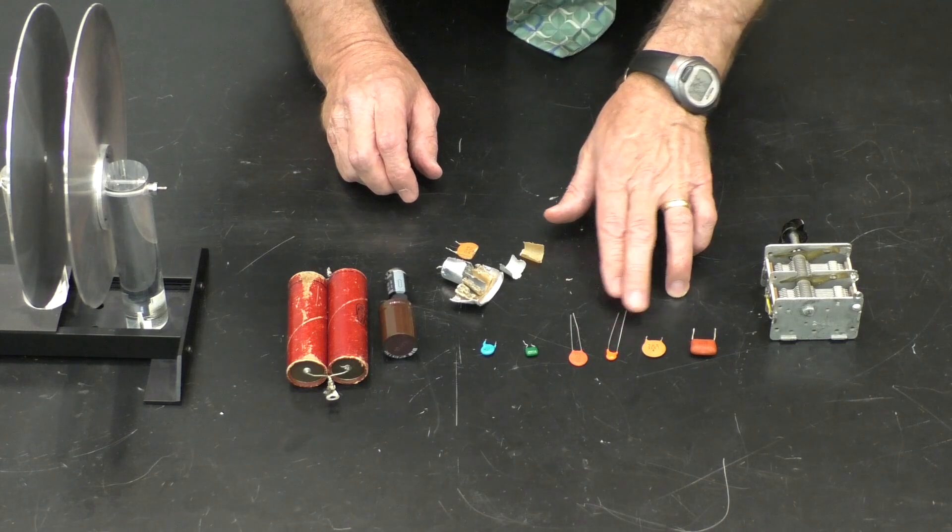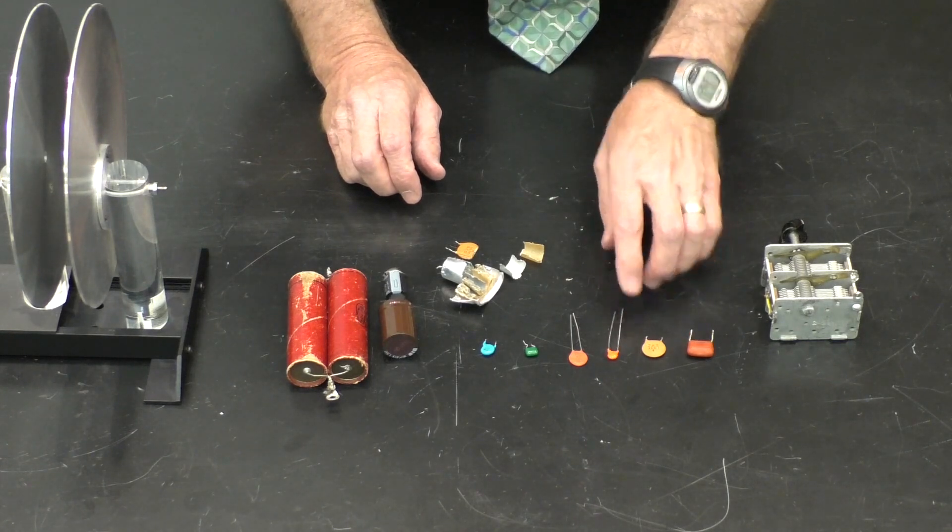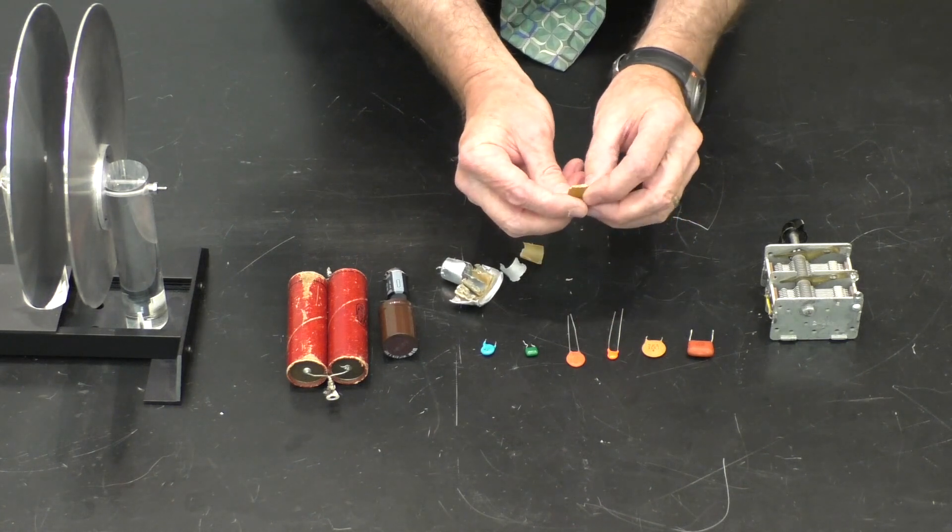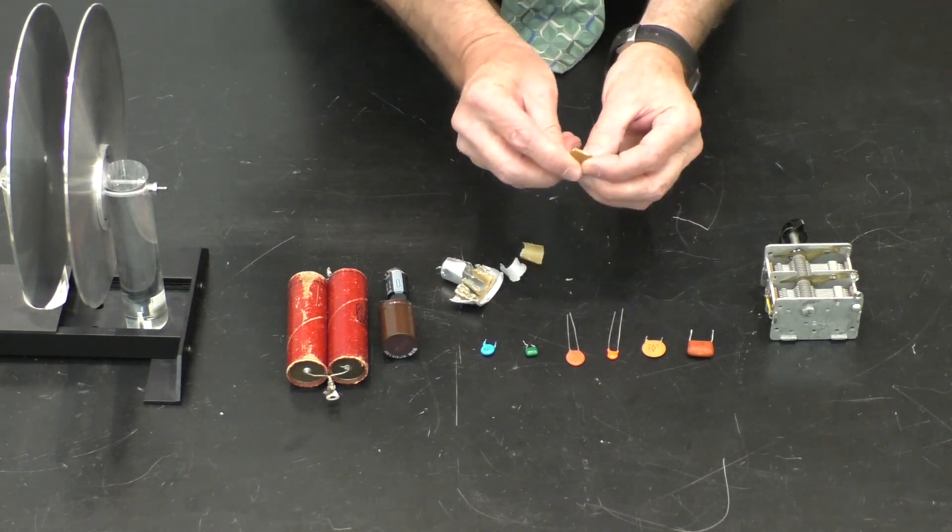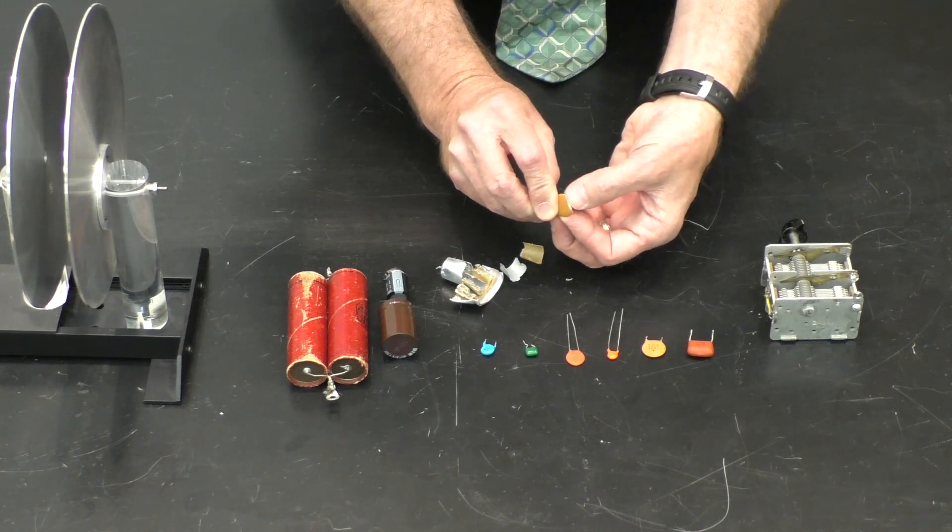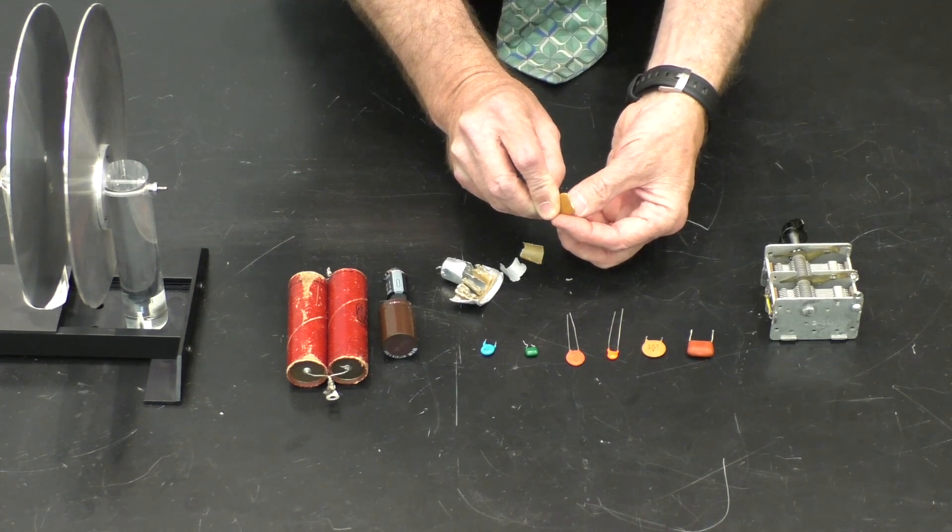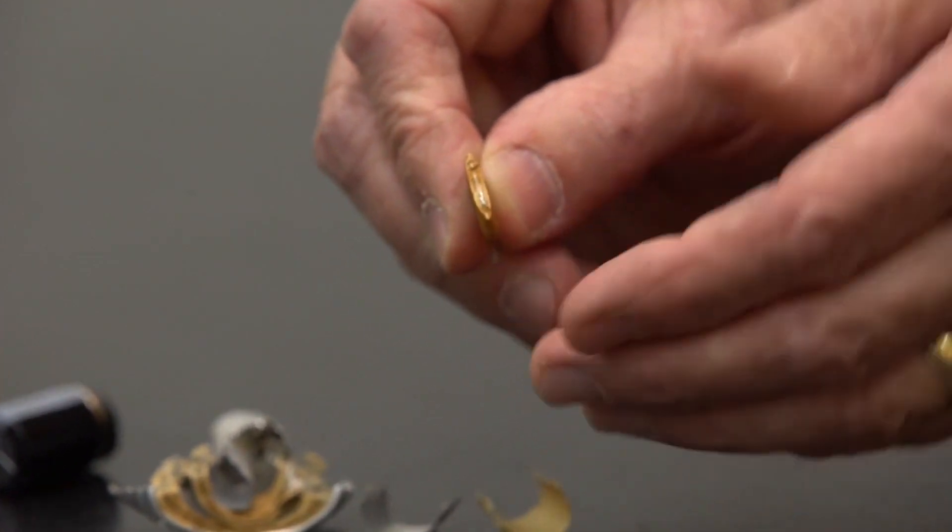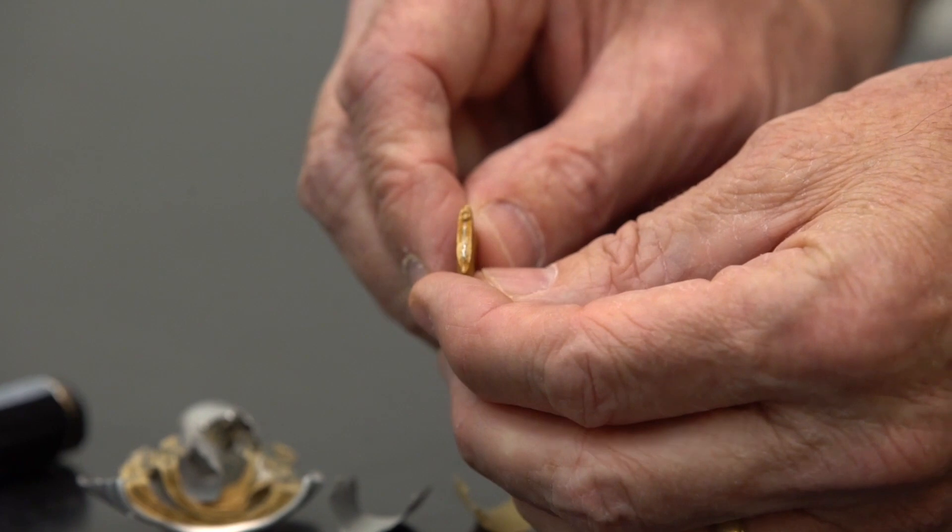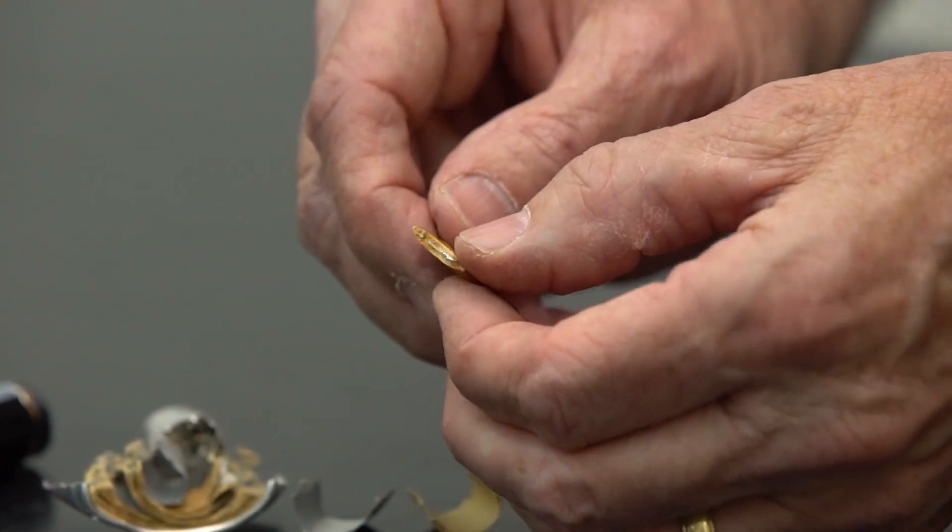These are smaller capacitors. This one's cut open. And you can see the metal layer here, maybe possibly, from the camera. And you need two metal plates. It's difficult to see both of them, but metal plates separated by an insulator.